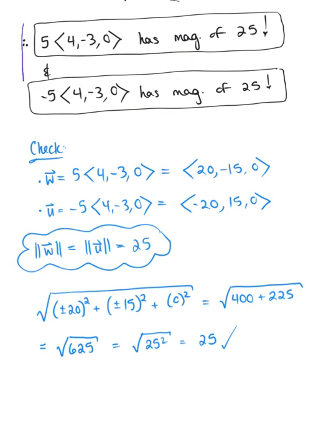And so we have officially confirmed our answer here. These are two vectors parallel to that given vector v, both with a magnitude of 25.